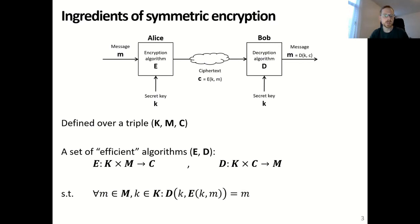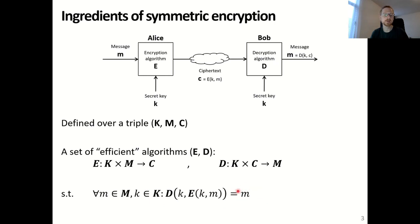Some properties that need to be satisfied are that the algorithms E and D need to be computationally efficient. This could mean theoretical efficiency, such as computational complexity, or practical efficiency, meaning that the execution time needs to be limited. Moreover, there is the correctness property that says that for any message M and key K, encrypting M with K and then decrypting the result again with K needs to result back in the original message M.